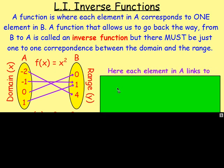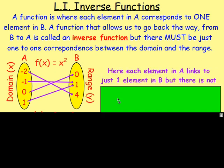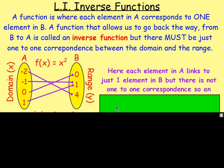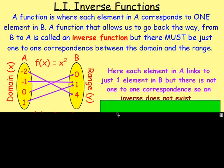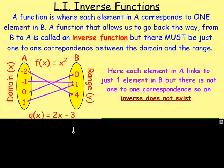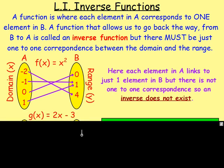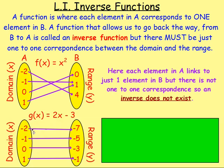So here each element in A links to just one in B, but there's not one-to-one correspondence — going back the way, it doesn't work, so you would say that an inverse does not exist. However, let's look at another function — g of x. Again we've got the domain and the range, so negative two would link to negative seven, negative one to negative five.